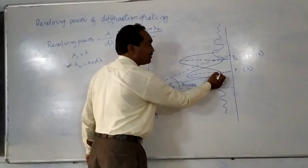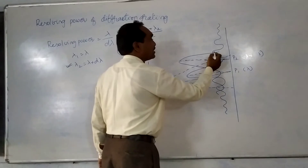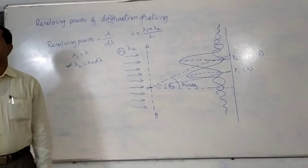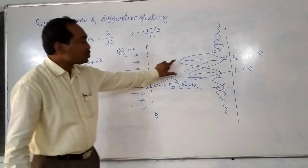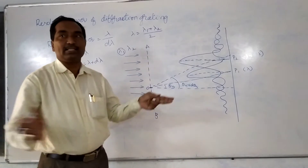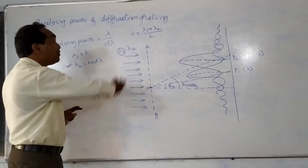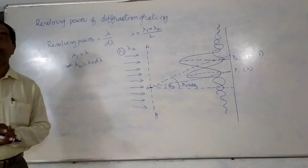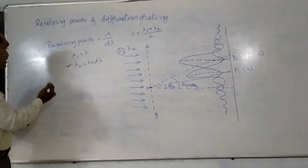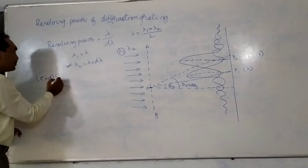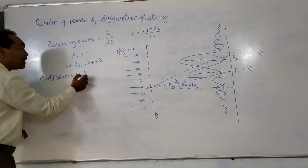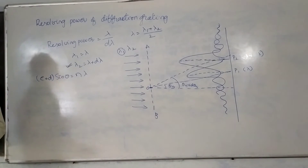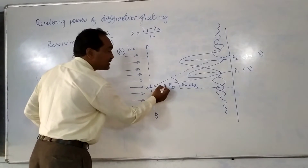To find the resolving power, we apply the condition for principal maxima using the diffraction grating: (e + d) sin(theta) = n*lambda. For the first spectral line of wavelength lambda, the angle of diffraction is theta-n, so (e + d) sin(theta-n) = n*lambda. The condition for minimum intensities is N*(e + d)*sin(theta) = m*lambda, where m takes all integer values except 0, N, 2N, 3N, and so on — because those values correspond to principal maxima.